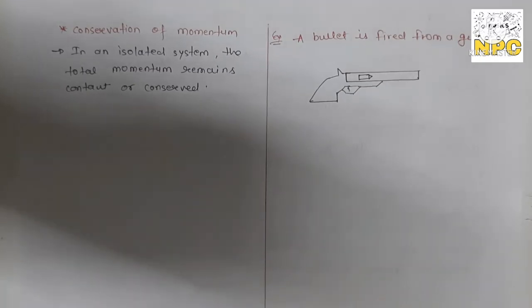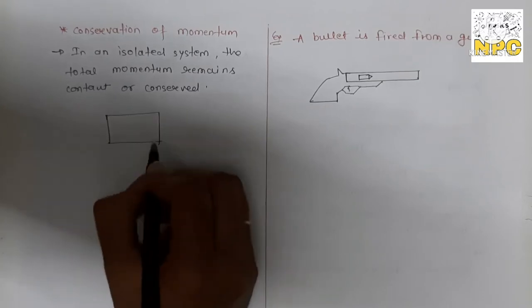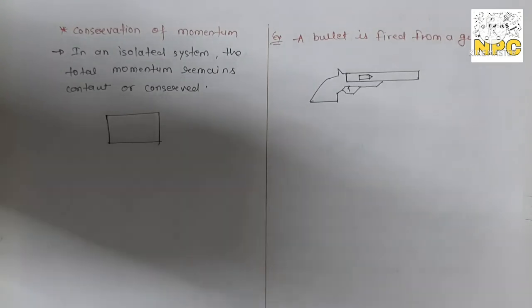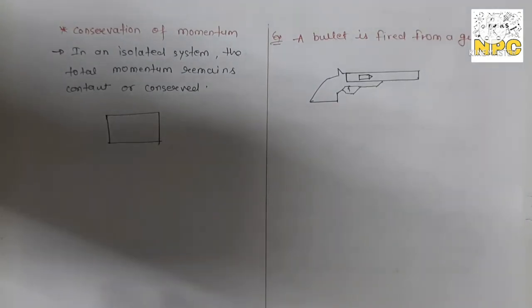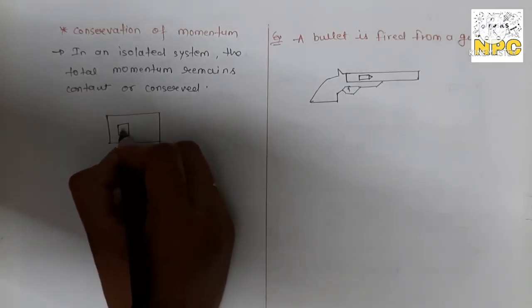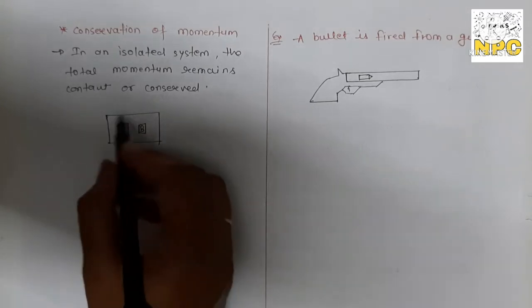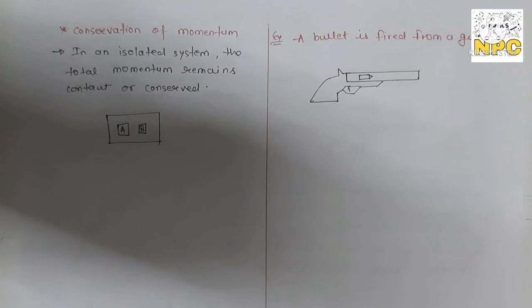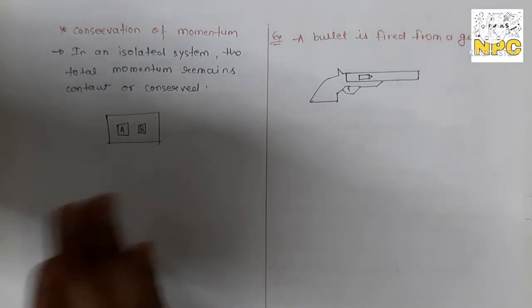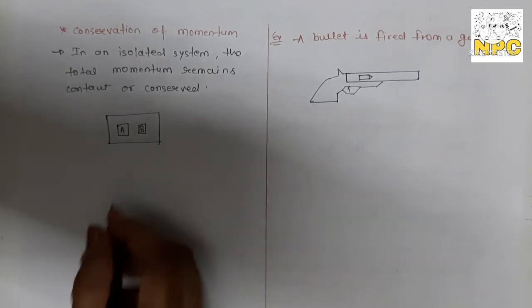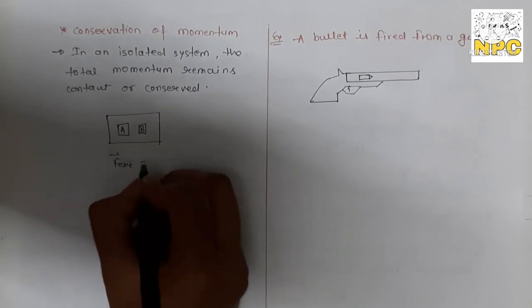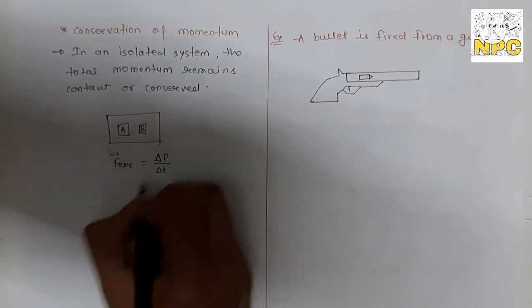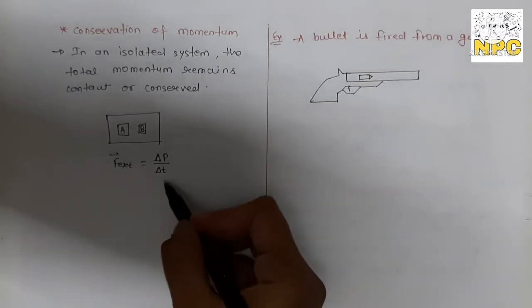Now we will discuss the conservation of momentum. In an isolated system, the total momentum remains constant or conserved. If you consider a system of one, two, or three bodies, the conservation of momentum applies to the whole system. When external force is zero, Newton's second law tells us the rate of change of momentum equals zero, so momentum is conserved.